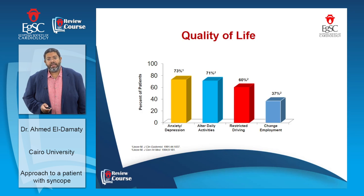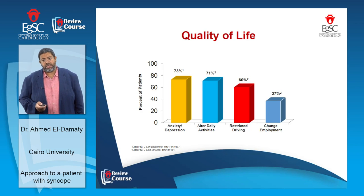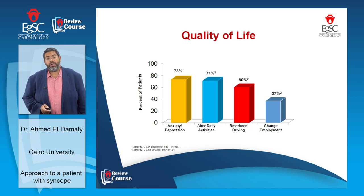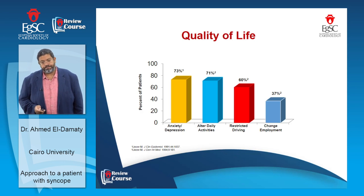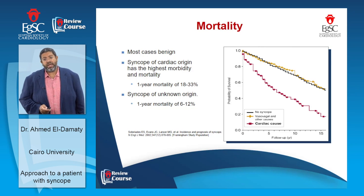Syncope significantly affects quality of life. Anxiety and depression can occur in about 70% of patients. It can affect daily activities in another 70%, lead to restricted driving in about 60%, and lead to lifestyle change including changing employment in close to 40% of patients. Regarding mortality, most cases are benign — there is no difference in mortality between vagal syncope and no syncope at all. However, mortality increases when the etiology is cardiac in origin.